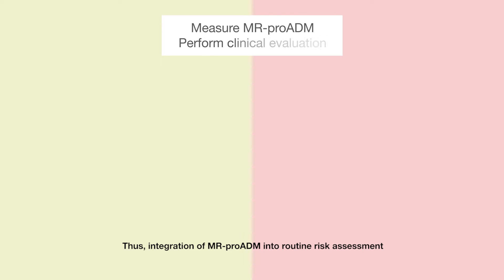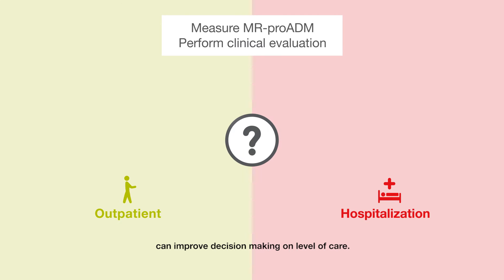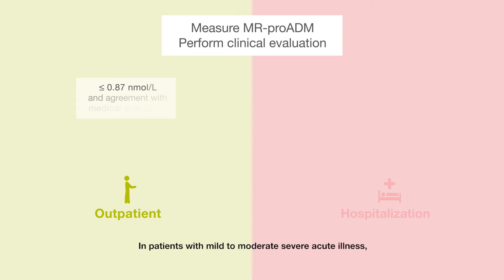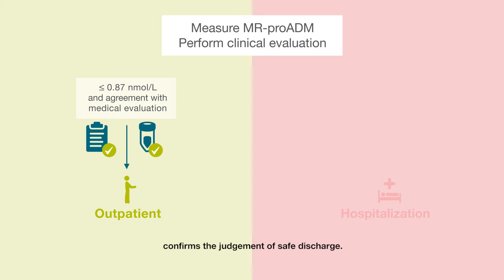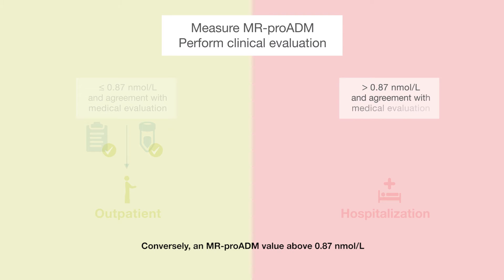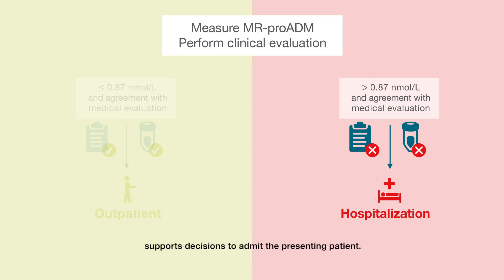Thus, integration of MR-PROADM into routine risk assessment can improve decision-making on level of care. In patients with mild to moderate severe acute illness, a clinical assessment suggesting outpatient treatment combined with an MR-PROADM value equal to or below 0.87 nmol per litre confirms the judgment of safe discharge. Conversely, an MR-PROADM value above 0.87 nmol per litre supports decisions to admit the presenting patient.